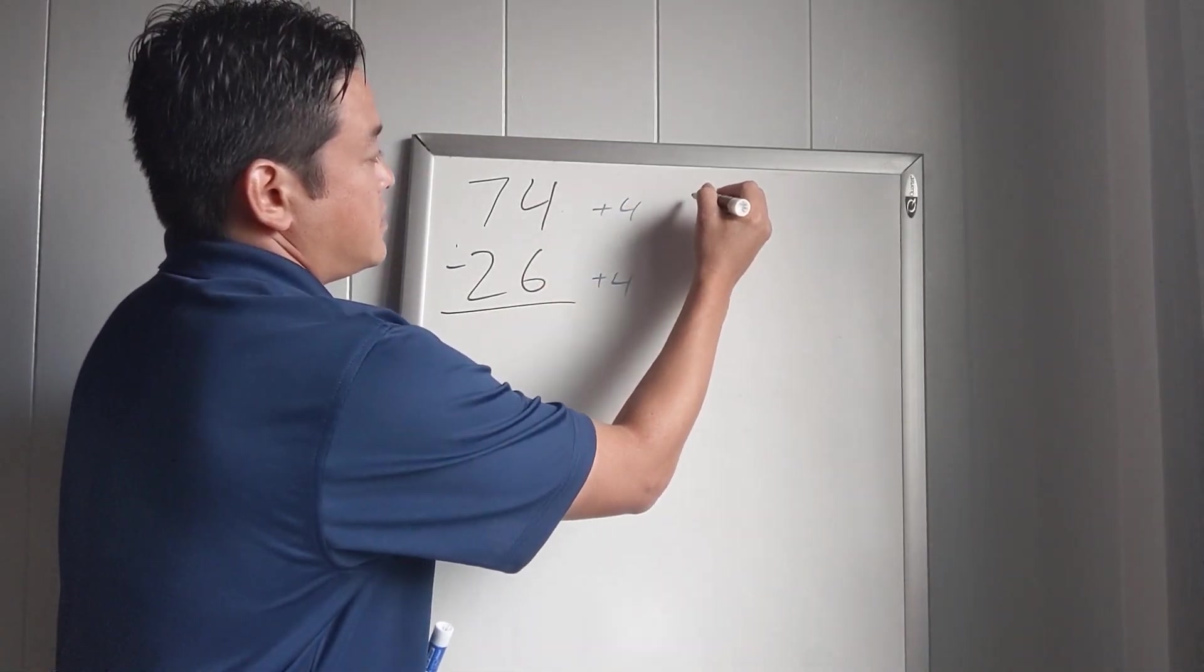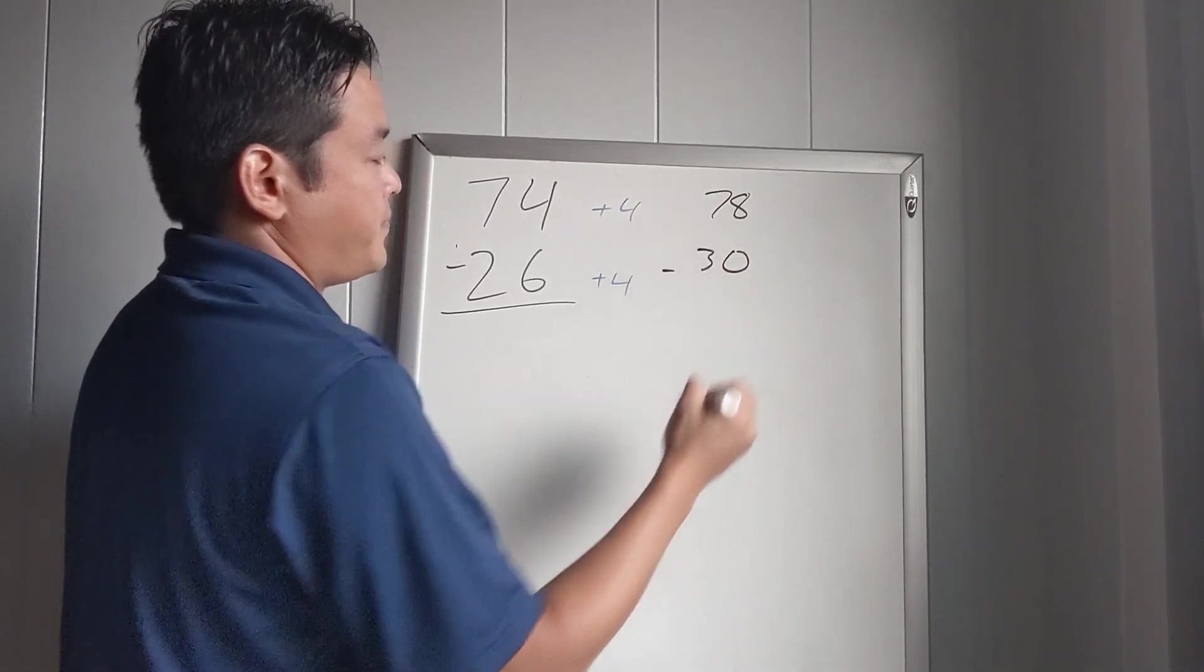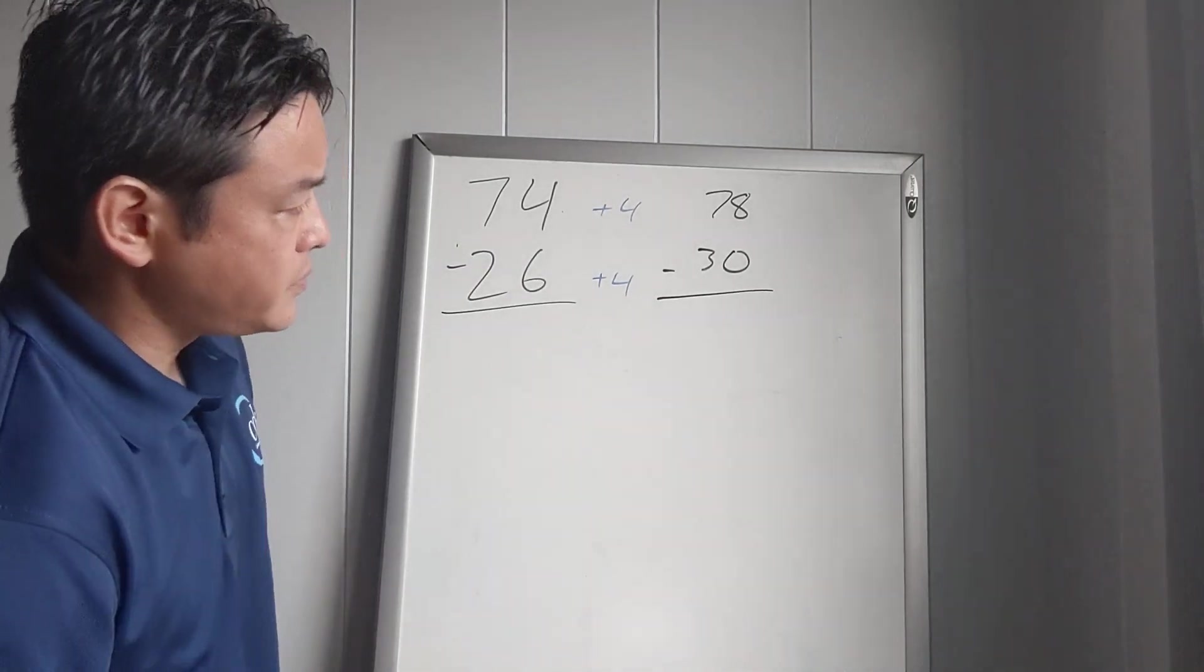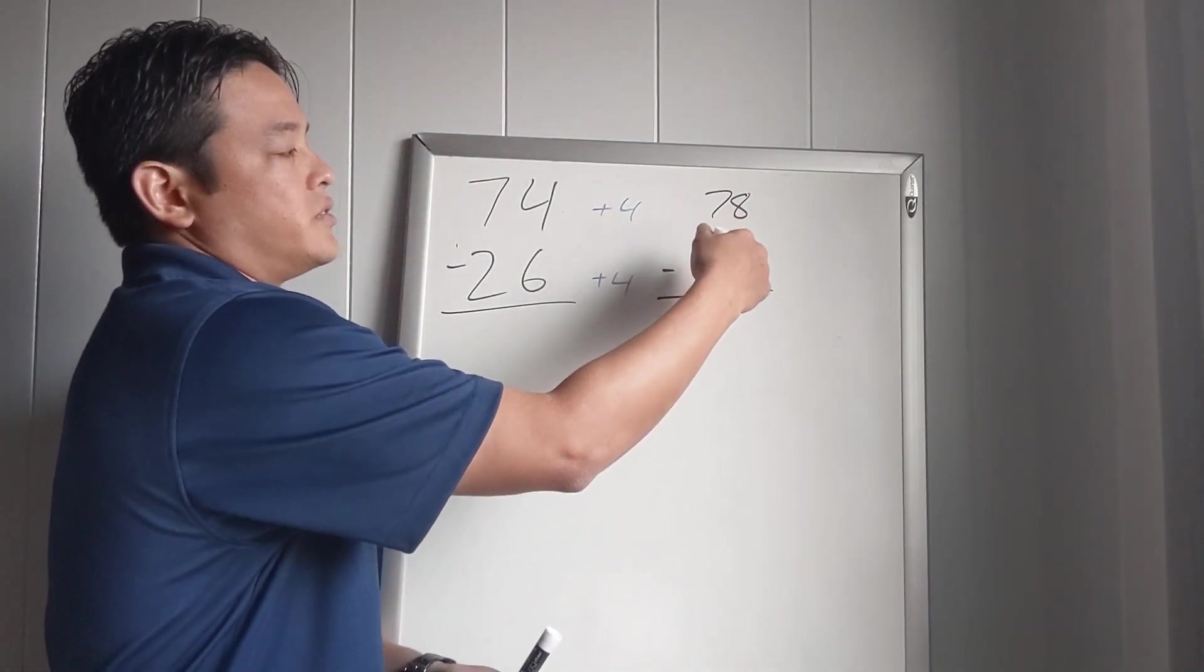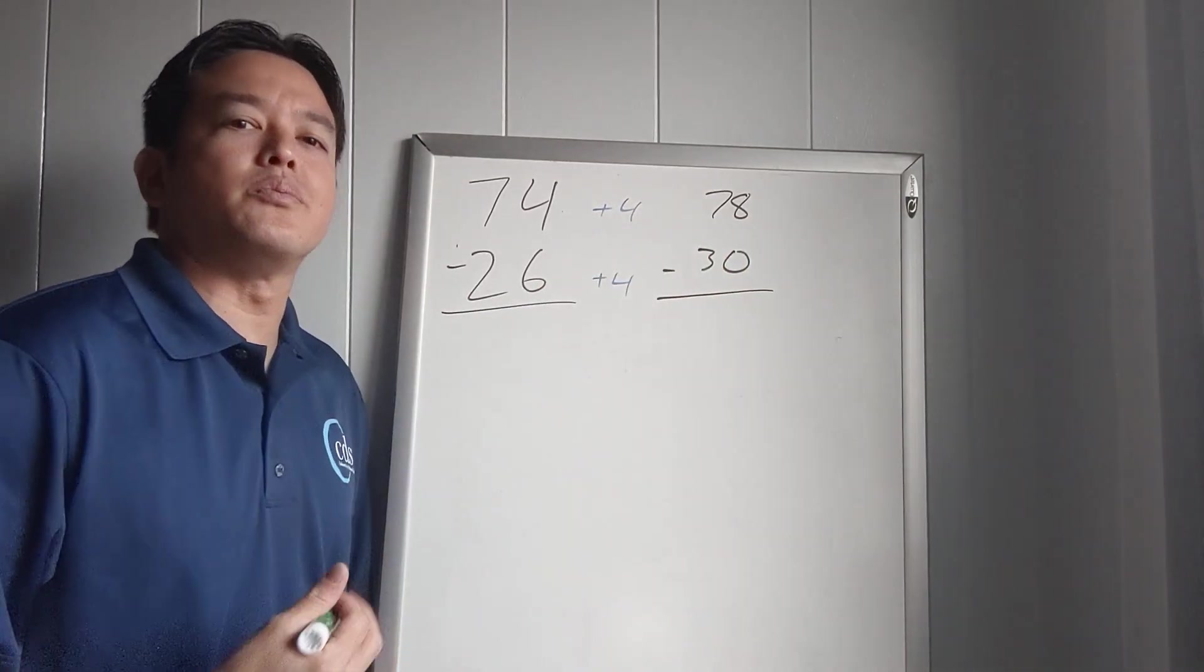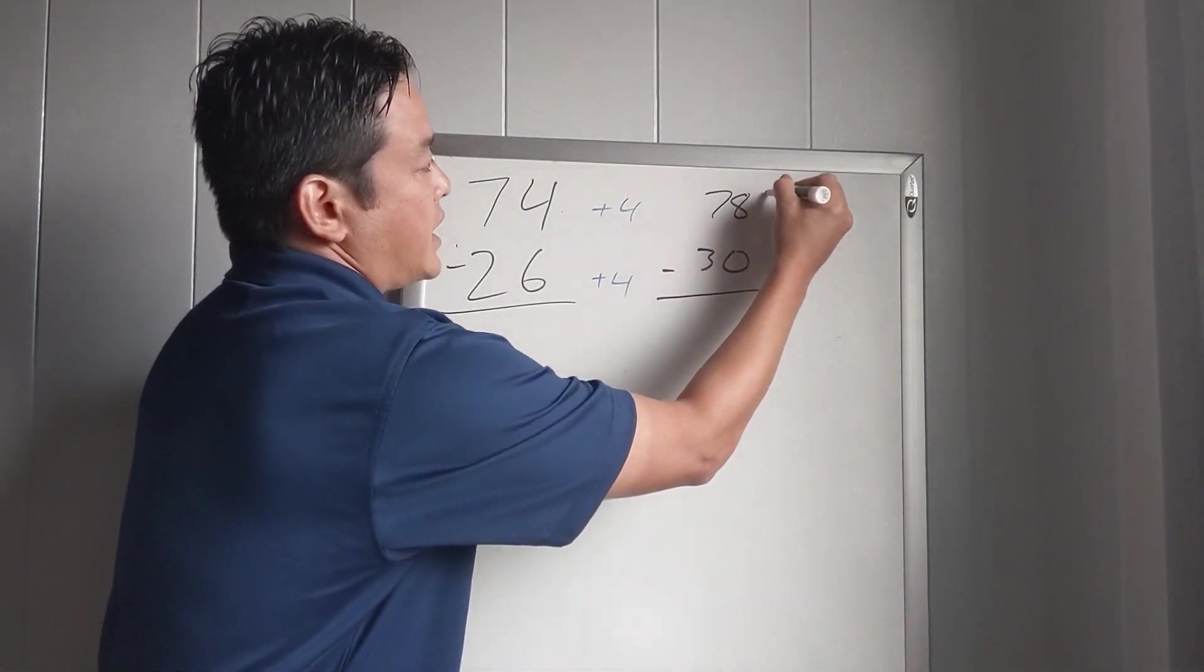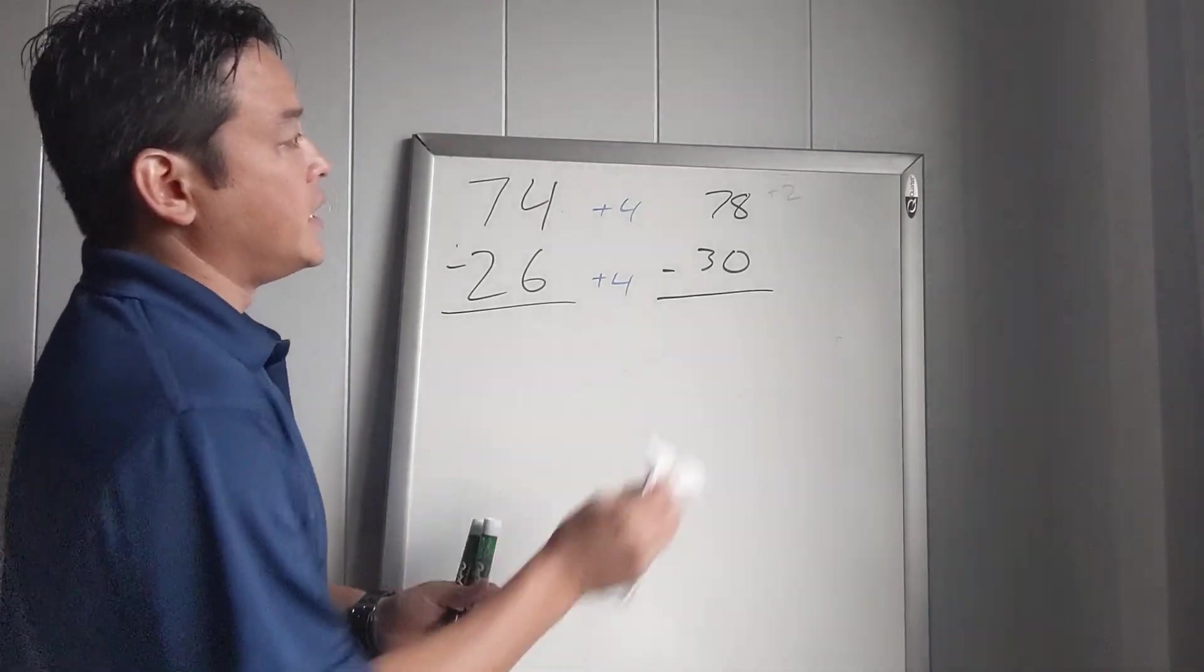So now this will become 78 minus 30. Now here you may think this way is still too hard. Sometimes you notice that if this was a whole number, it would make the subtraction a lot easier. So what if we change this and add plus 2 up here? We'll make that 80.